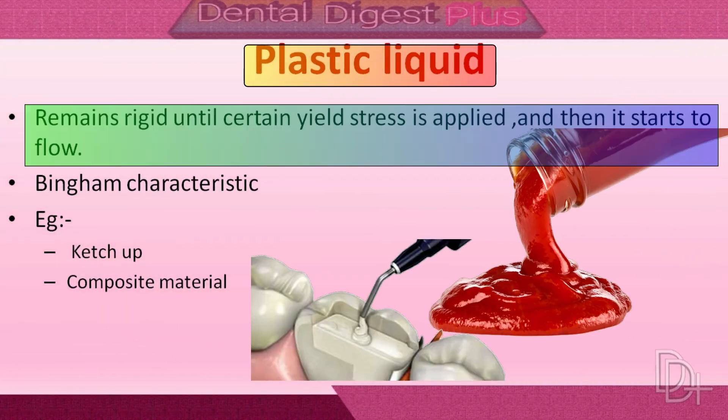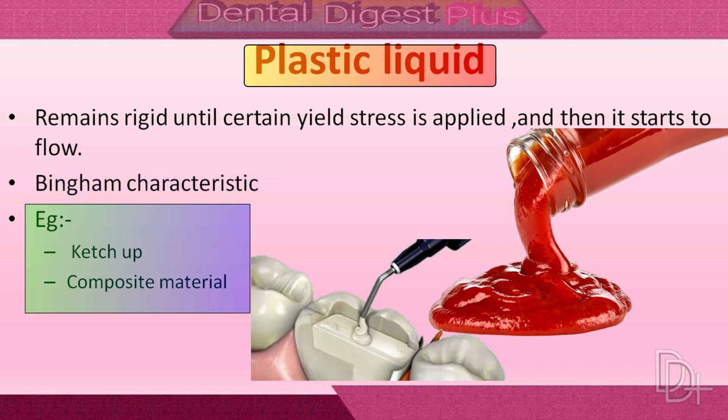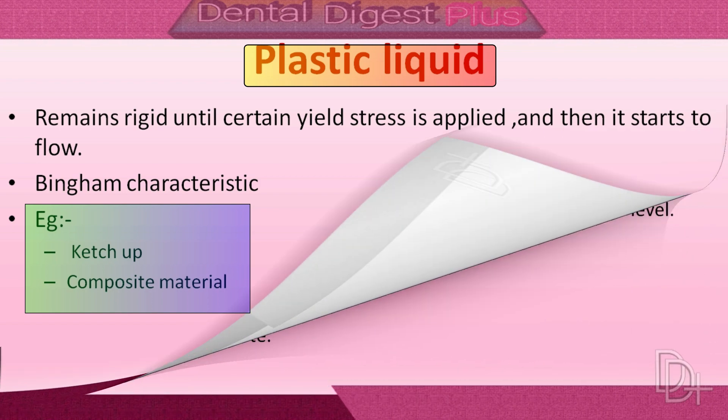Plastic liquids remain rigid until a certain yield stress is applied, after which they start to flow. The application of this yield stress to cause flow in a plastic material is called the Bingham characteristic. Examples include ketchup, and in dentistry, composite material.